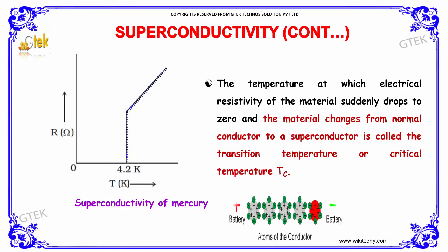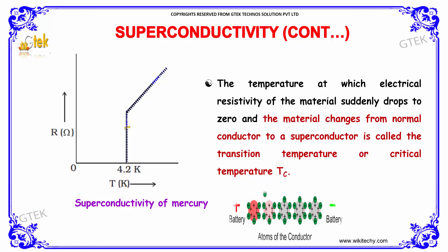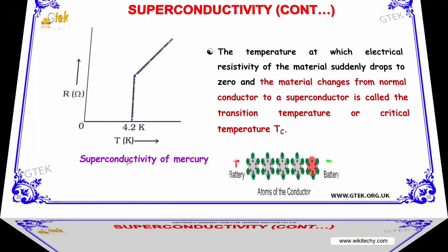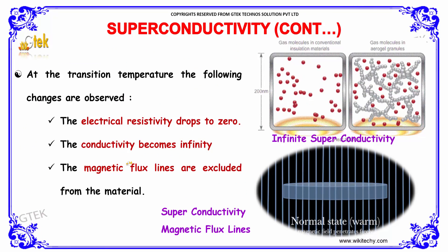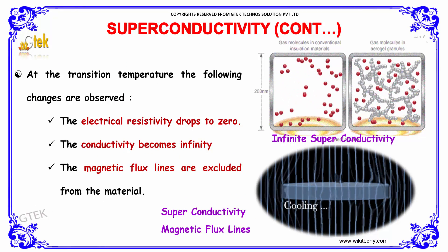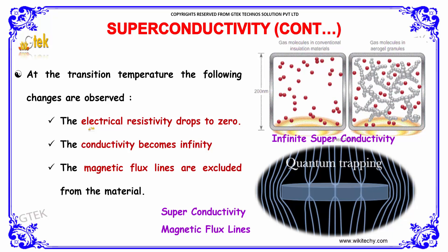Moving further, we are going to talk about superconducting temperature. The temperature at which the electrical resistivity of a material suddenly drops to zero — as you can see here — and the material changes from a normal conductor to a superconductor, is called the transition temperature or critical temperature. This is shown here for mercury at 4.2 Kelvin.